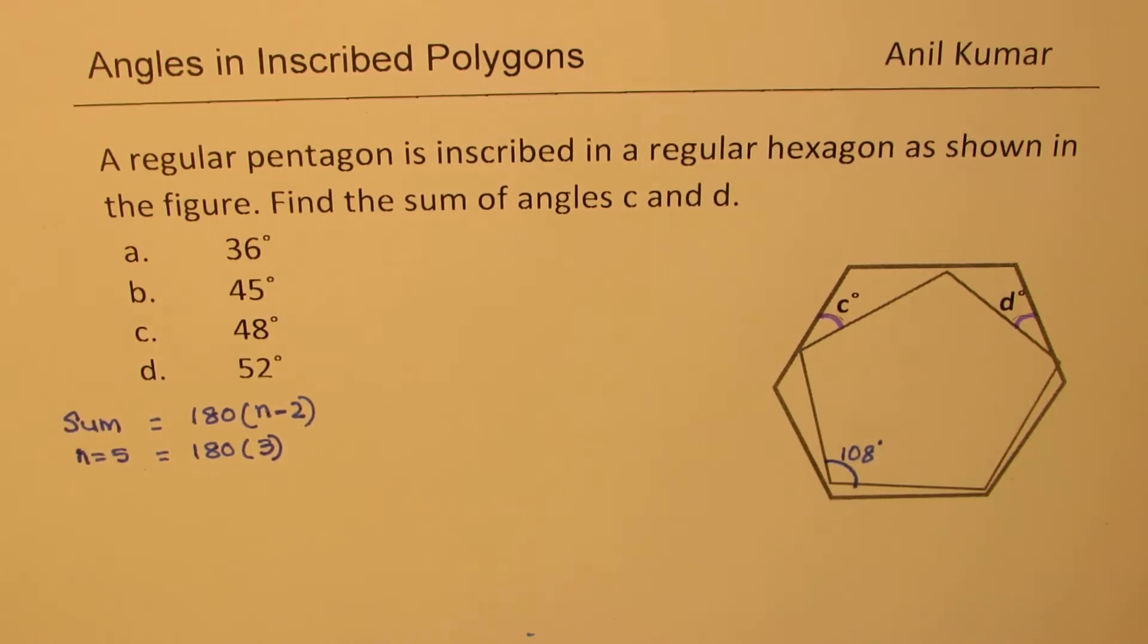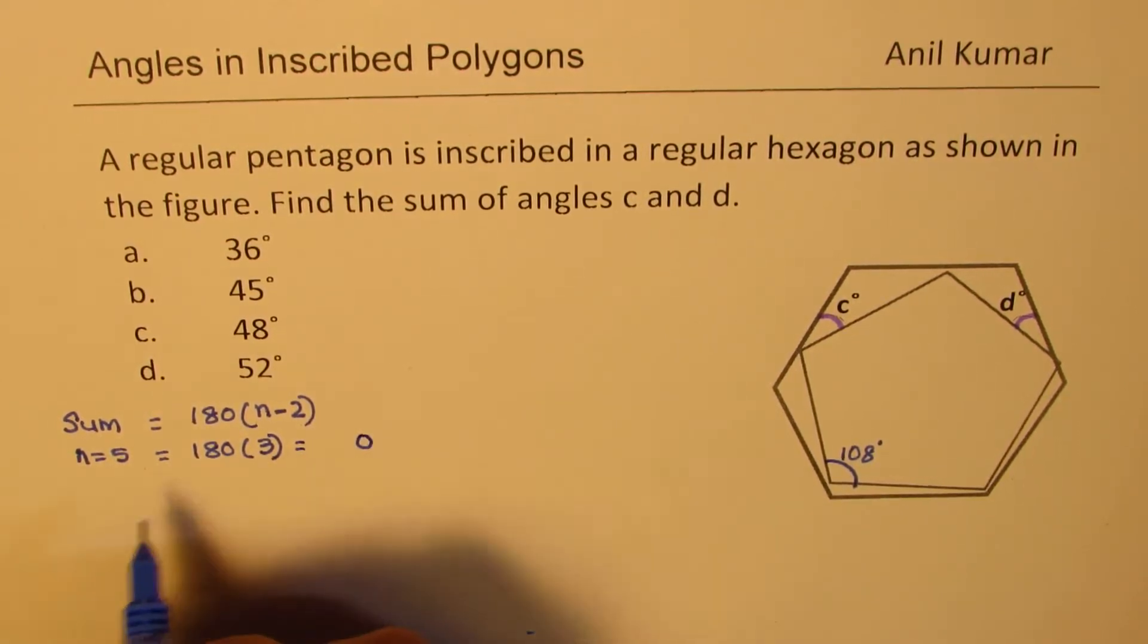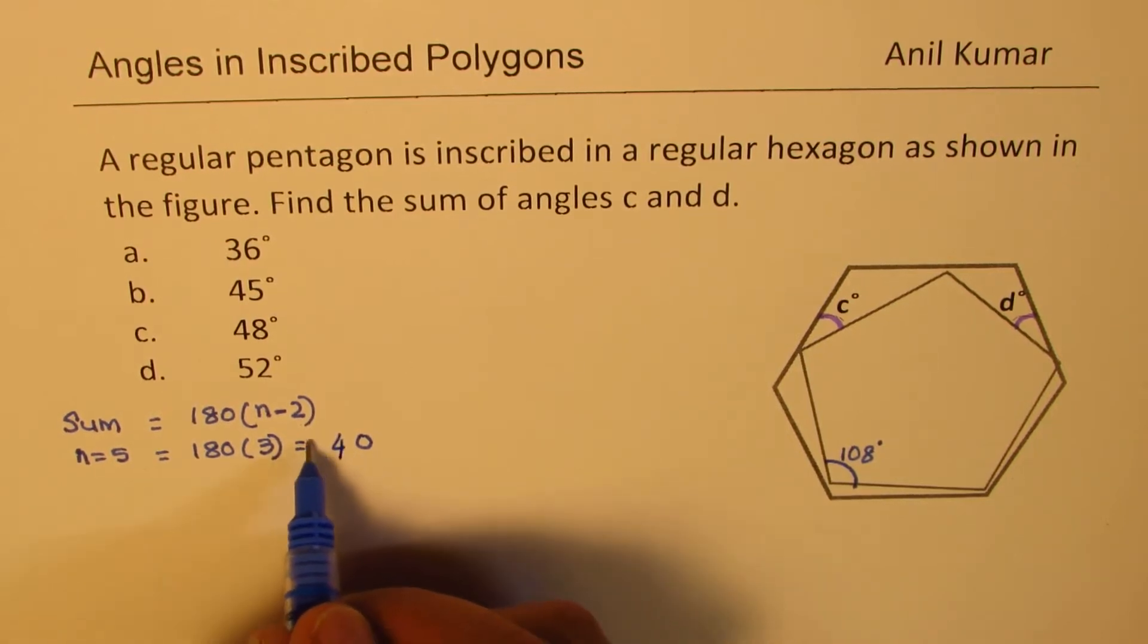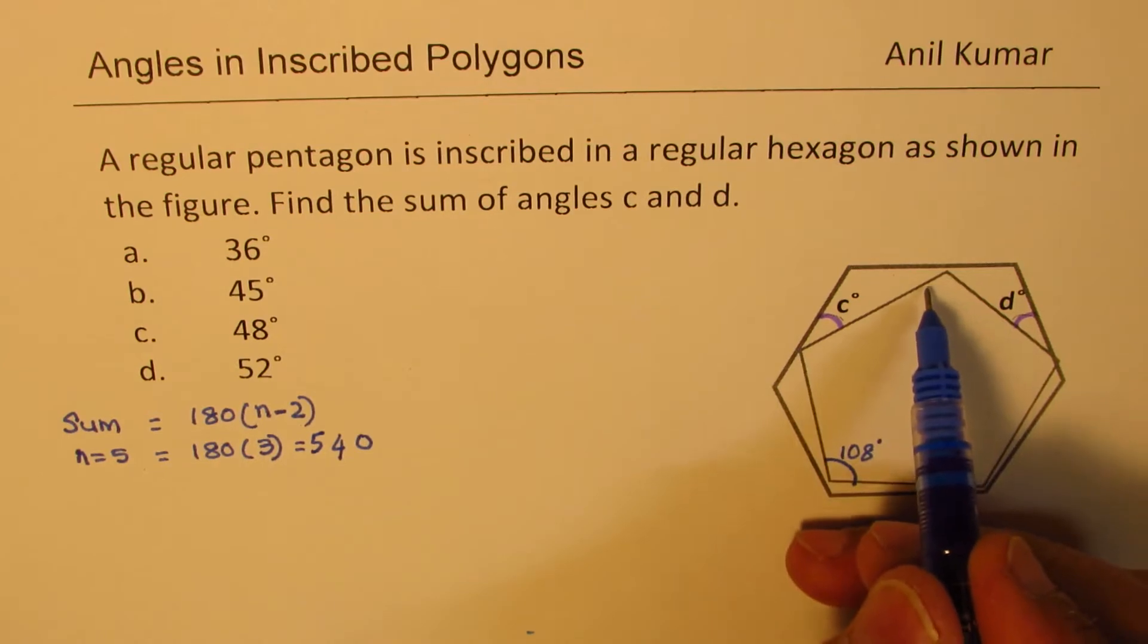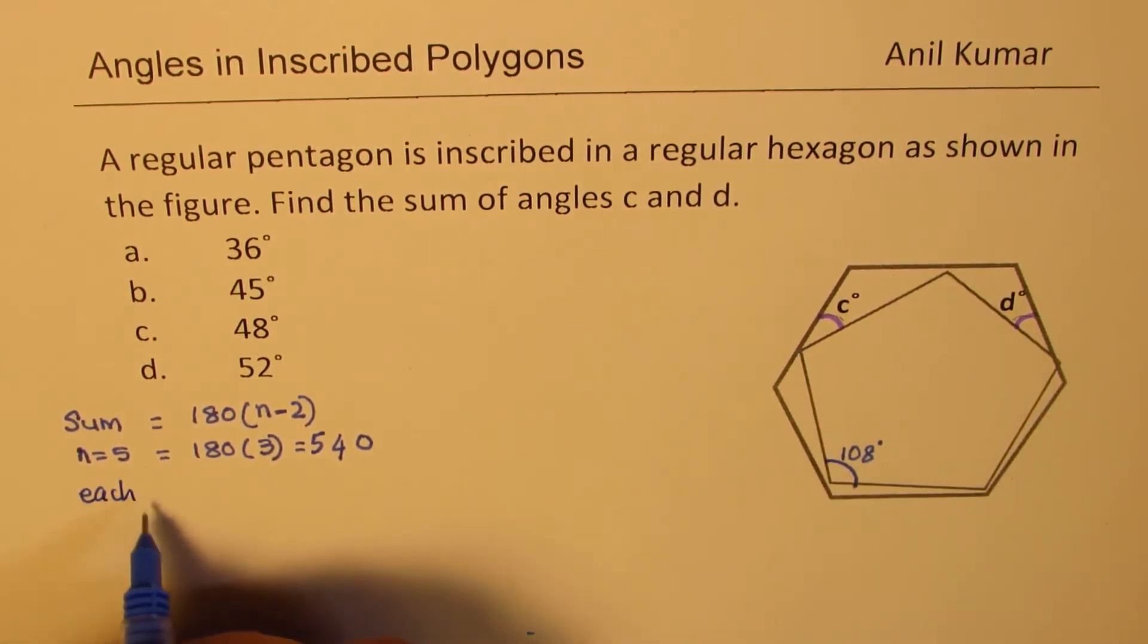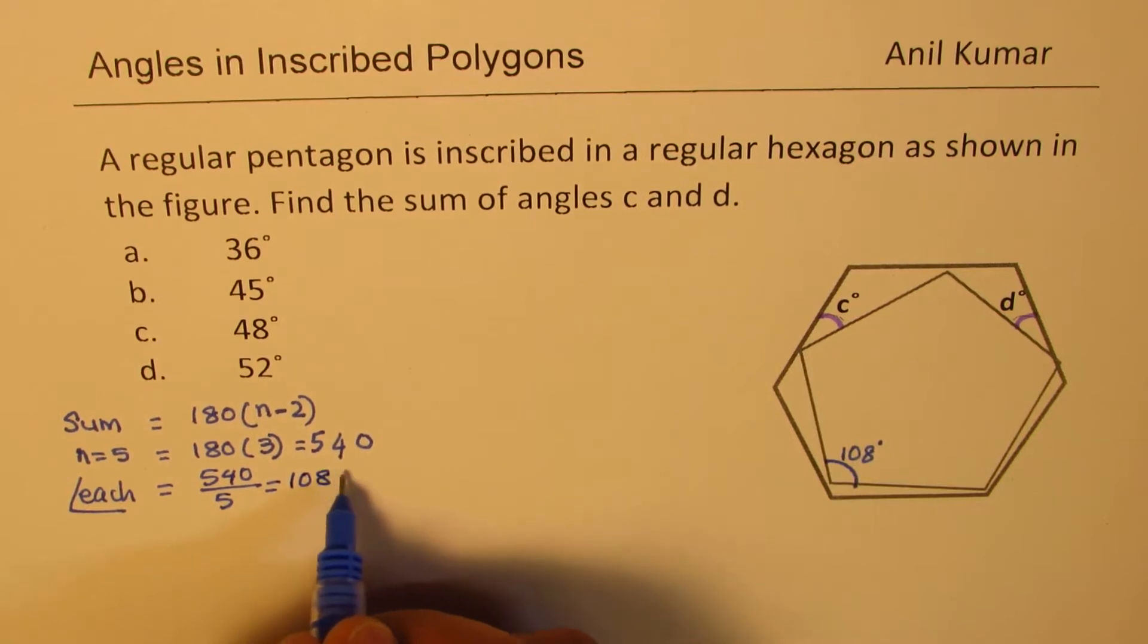Now in this, we get 540. Now each vertex is same, so each angle will be 540 divided by 5, so we get 108 degrees.